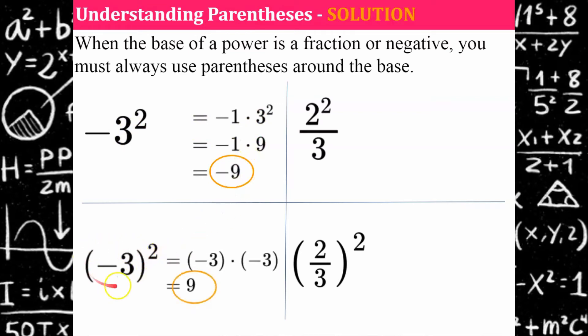Here we have a base of negative 3 and we want to repeatedly multiply it twice. Negative 3, negative 3. So I have two negative 3s being multiplied and their product is positive 9. Here my numerator is 2 times 2, 4, and my denominator is 3. Here our base is 2 thirds. So 2 thirds times 2 thirds, which is 2 times 2 for our numerator and 3 times 3 for our denominator, giving us a value of 4 ninths.